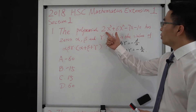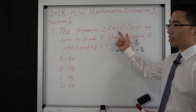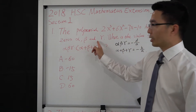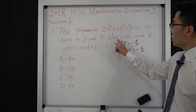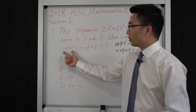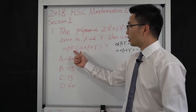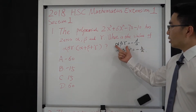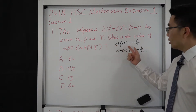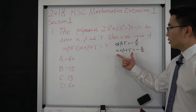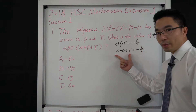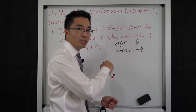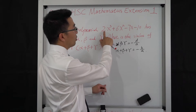We have a polynomial 2x³ + 6x² − 7x − 10 which has 3 zeros: alpha, beta, and gamma. The question is: what is the value of the product of these 3 zeros times the sum of these 3 zeros? For this question, we need two formulas. The product of 3 zeros equals negative D over A, and the sum of the 3 zeros equals negative B over A. We have coefficients A, B, C, D representing these four coefficient numbers.